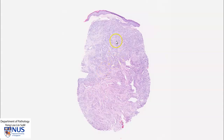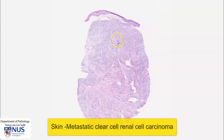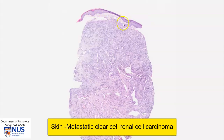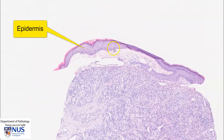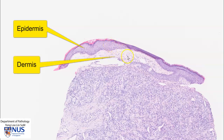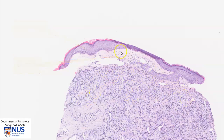Hello, this is a virtual microscopy slide of metastatic renal cell carcinoma to the skin. Let's first orientate ourselves. Here we can see the epidermis, which is composed of stratified squamous epithelium, and below this is the dermis, and this whole area is the tumor deposit.